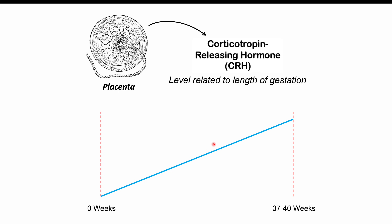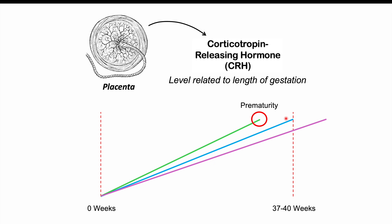This placental CRH pattern differs in premature deliveries. In premature deliveries, the slope of increase of placental CRH is higher — a faster increase that peaks earlier, before 37 weeks gestational age. With post-term pregnancy, the opposite occurs: a lower slope of increase that peaks later, after 40 weeks and up to 42 weeks or beyond. This is one of the main hypotheses for changes in delivery timing, and it is why this is termed the placental clock.